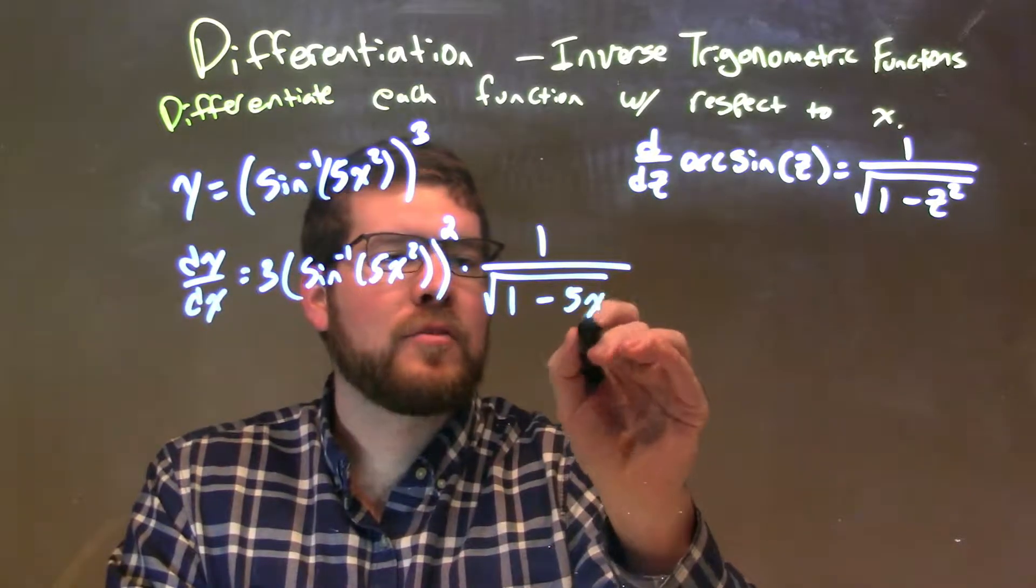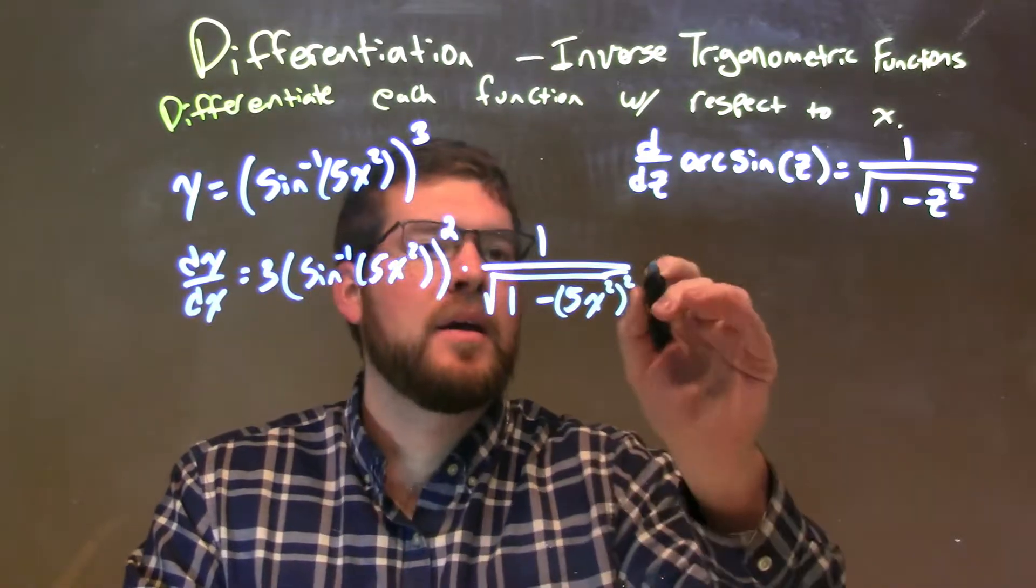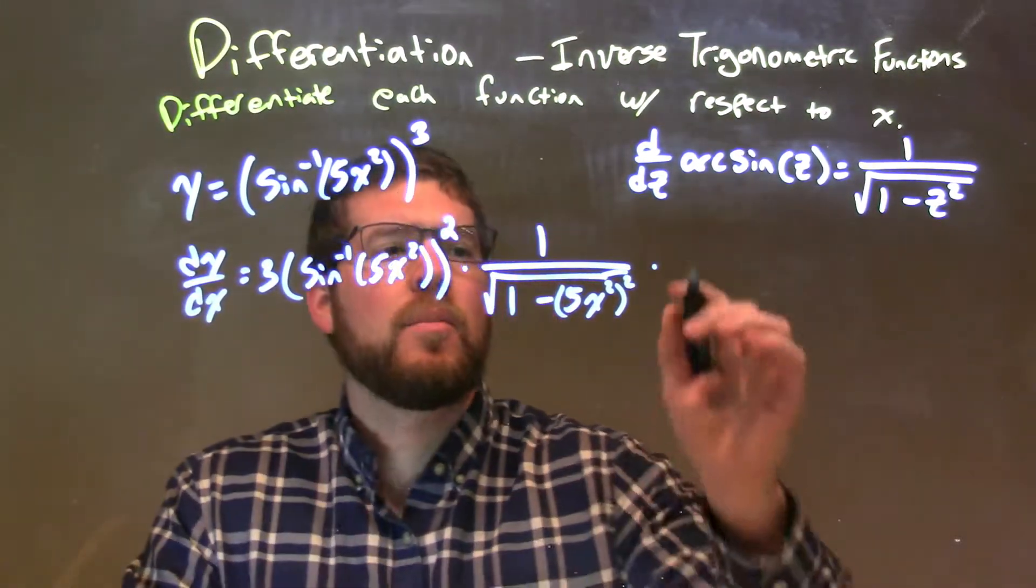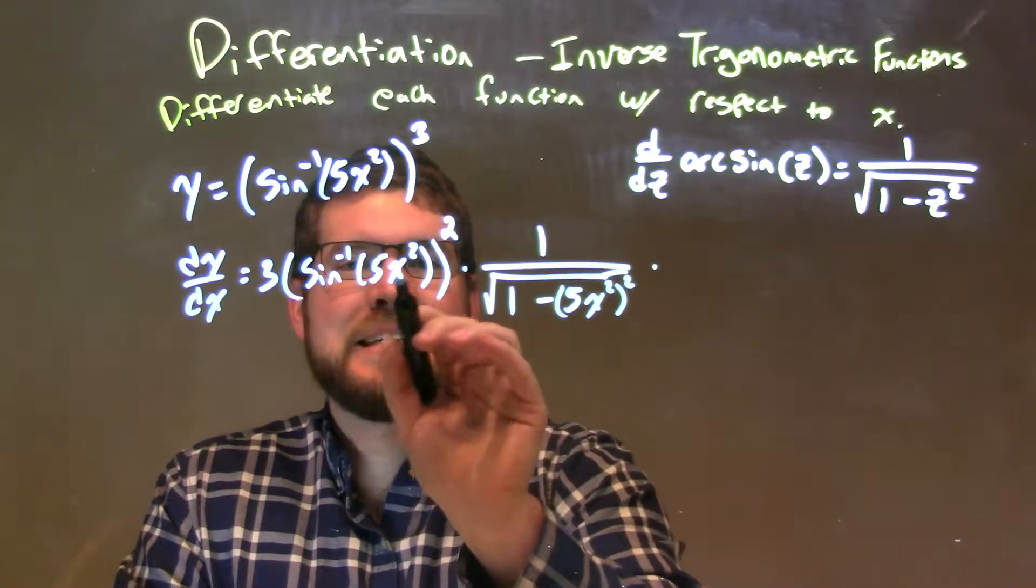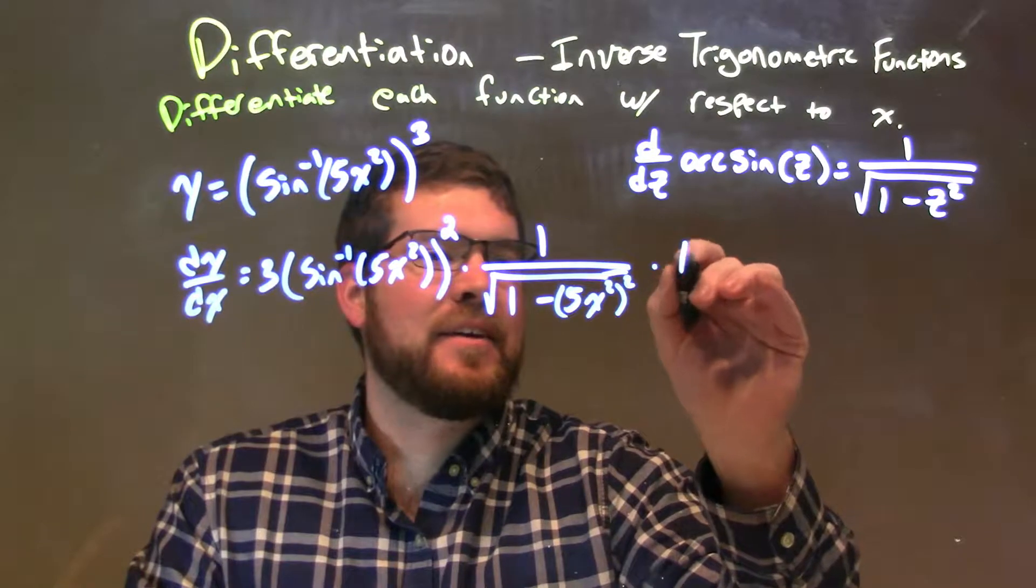I have 5x squared, and I'm going to be squaring all of that. Lastly, in our chain of chain rules here, we multiply that by the derivative of this inside little parentheses. 5x squared power rule is 10x.